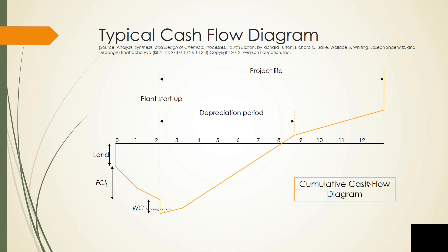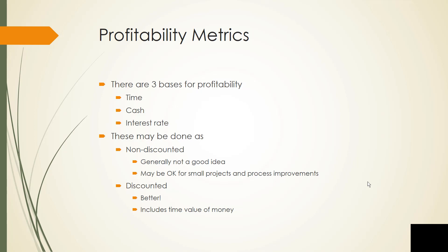We want to now begin analyzing this. There are several profitability metrics — basically three bases that are used: time, cash, or interest rate. You can do any of these three in either non-discounted or discounted ways. Non-discounted ways are generally not a good idea, but sometimes we use them for small projects or process improvements where the values are very different and decisions will probably be the same for a lot less effort. Discounted methods are definitely better because they include the time value of money. In this lesson, we're looking strictly at the non-discounted techniques.